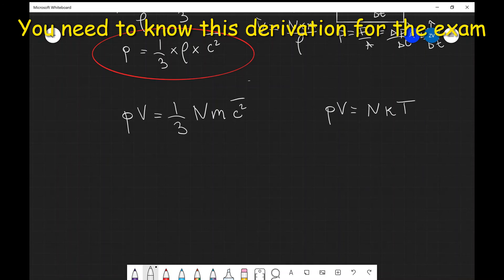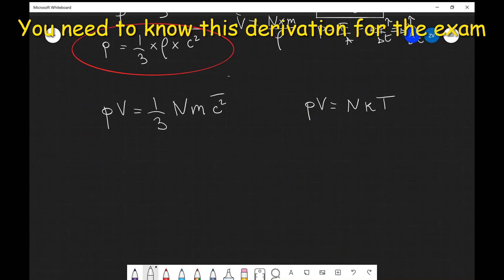If you're feeling a little bit rusty with PV equals NKT, have a look through the channel and I made a pretty detailed video on the ideal gas law equation. So the obvious thing that we can do with those two equations is set them equal.